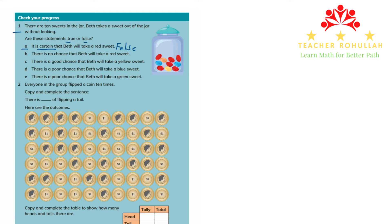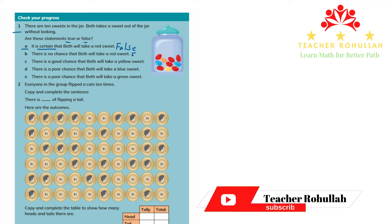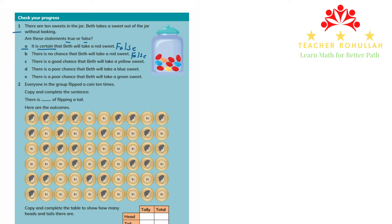Statement B says there is no chance that Bet will take a red sweet. This is also false. There are actually six chances of taking a red sweet. So this is false — there are chances, but it's not certain.